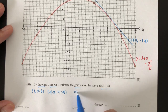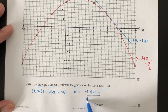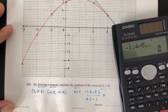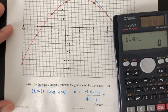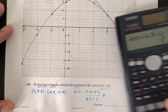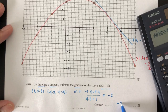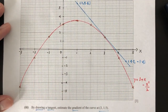To find the gradient, we use the formula: (y2 minus y1) divided by (x2 minus x1). So that gives us (minus 1.4 minus 5.6) divided by (4.5 minus 1), which gives approximately minus 2. Your values may be a bit different, and that's okay, as long as you show how you found your values.